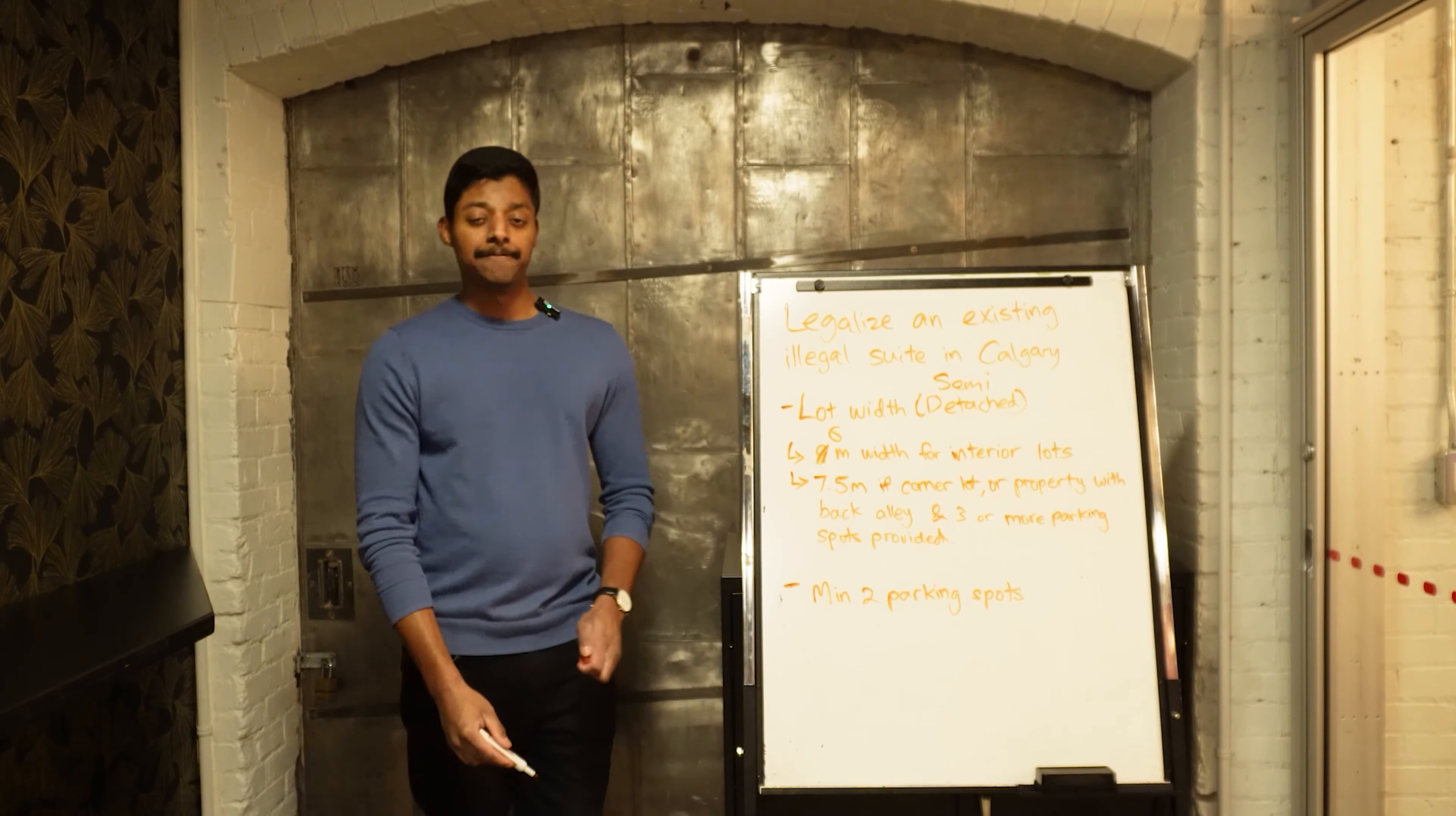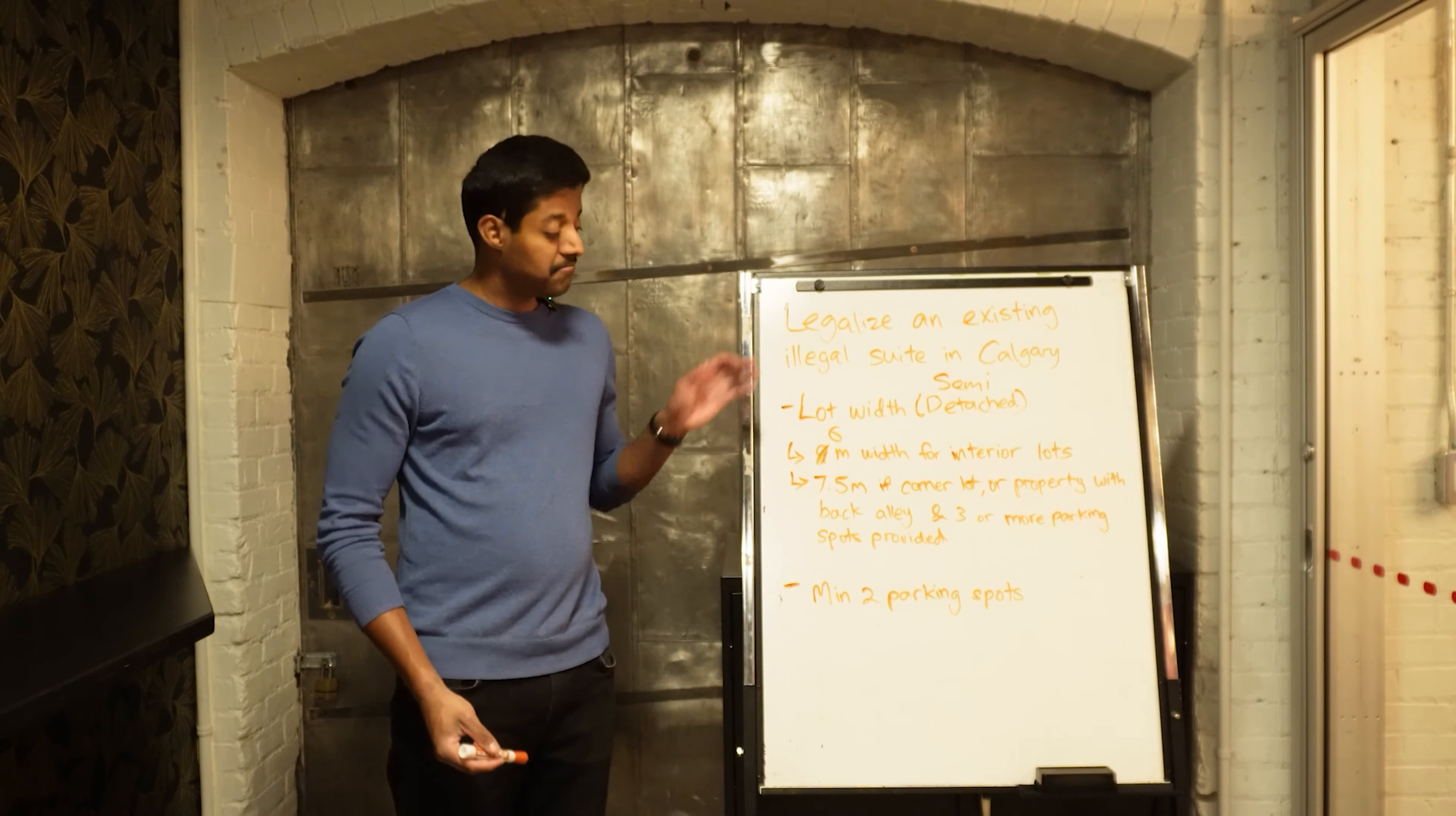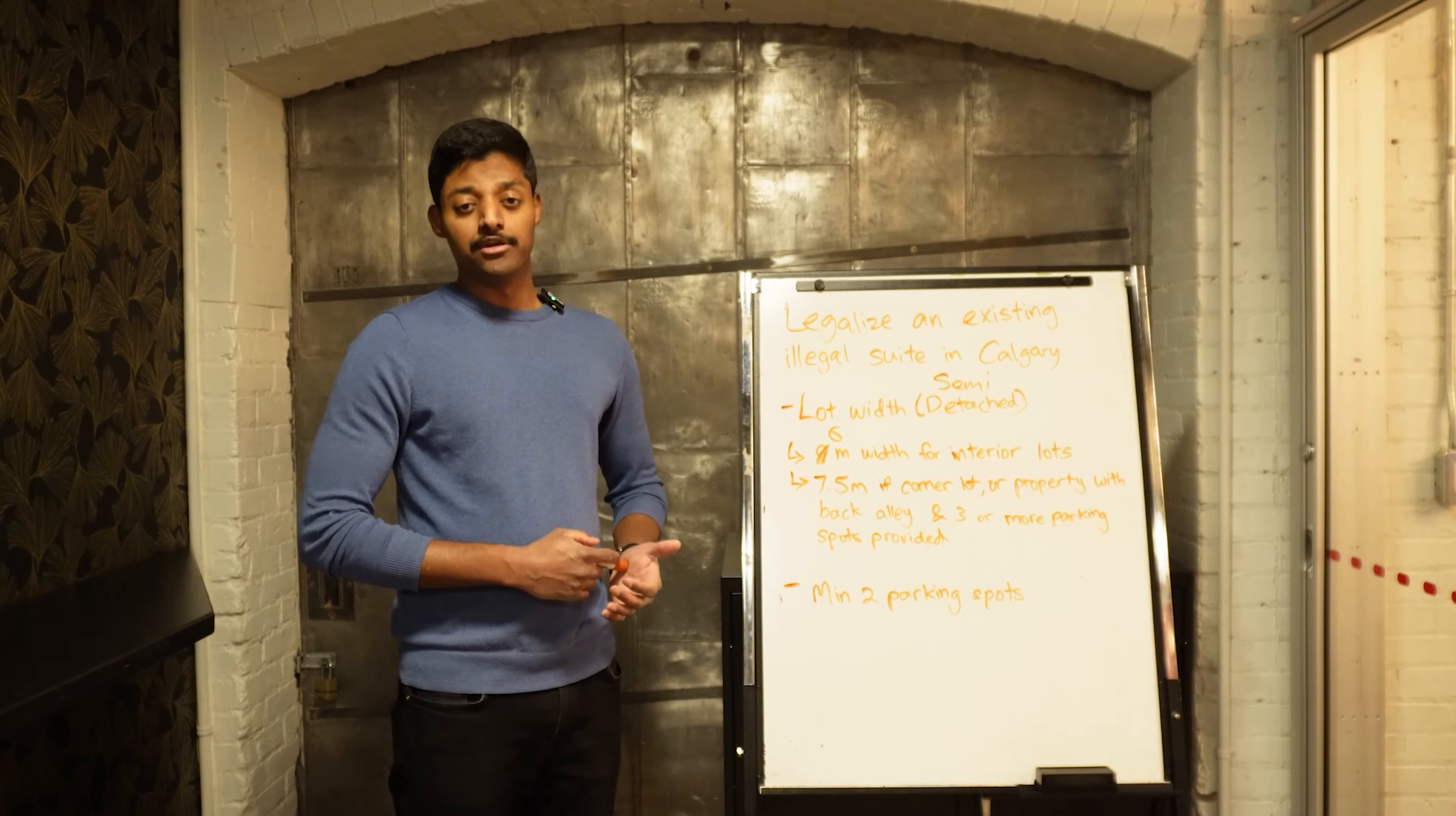In the case of a semi-detached property, so you buy a half duplex, we're looking at a semi-detached now. This nine meter lot width requirement essentially becomes six meters. So that gives you a bit more leeway.